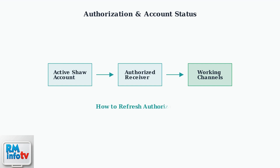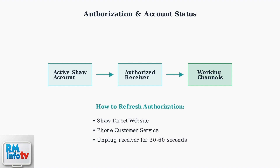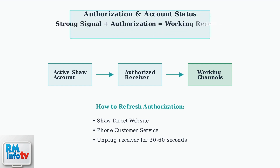To refresh your receiver's authorization, you can use the SHA-DIRECT website, call customer service, or simply unplug your receiver for 30 to 60 seconds and plug it back in. Remember, both strong signal and proper authorization are essential. Check your signal strength first, then verify your account status and refresh if needed.